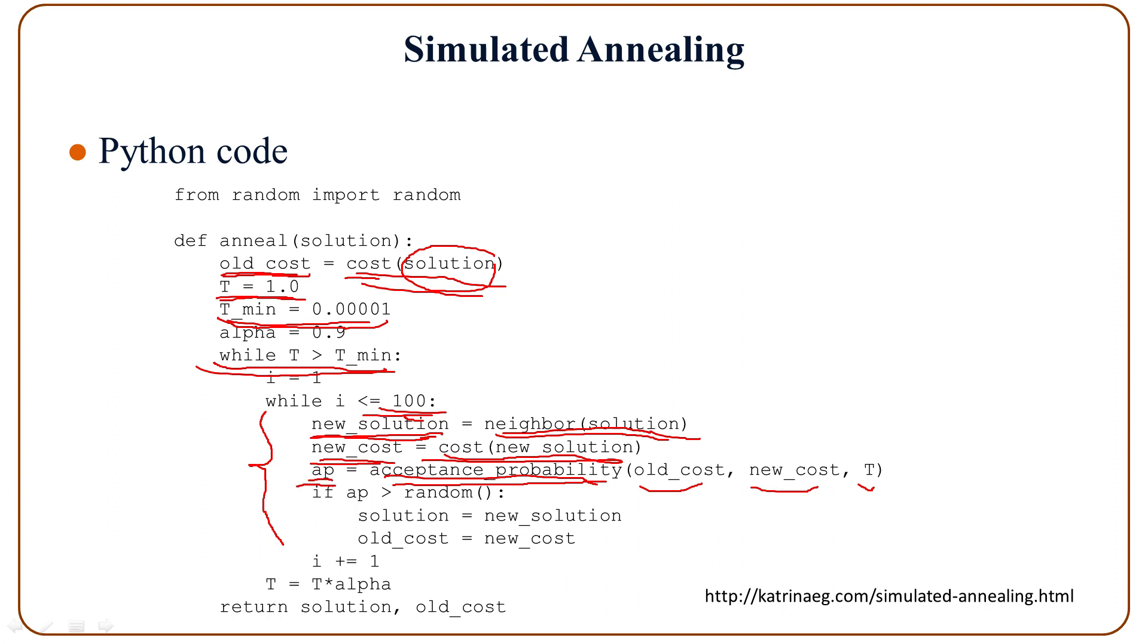So basically this computes e to the negative delta cost divided by the temperature T, and stores the result in AP, acceptance probability. So if AP is greater than a random value, then accept the solution.